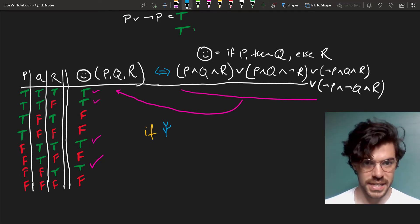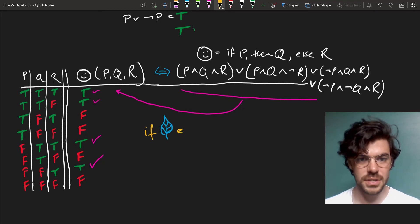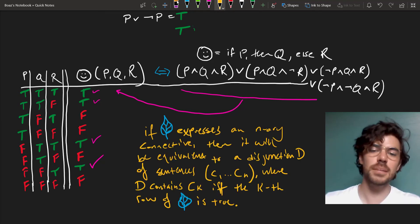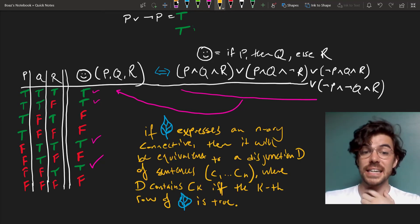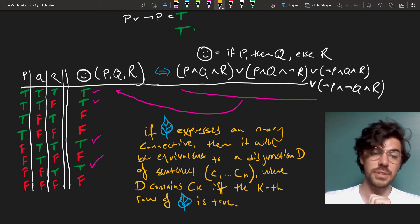So the rule is, if an operator like tree, or like leaf, let's make this a leaf. If an operator like leaf expresses an n-ary connective, then it'll be equivalent to a disjunctive string, d, of sentences, c1 through cn, where d contains ck if and only if the kth row of leaf is true.